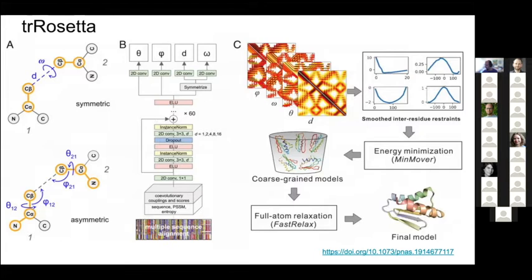You take a deep network — essentially a standard image network — and predict not only contacts but also distances and angles between every pair of residues. Specifically, you predict the probability of two residues being 8, 10, or 12 Ångström away from each other. This is what we used in our study.